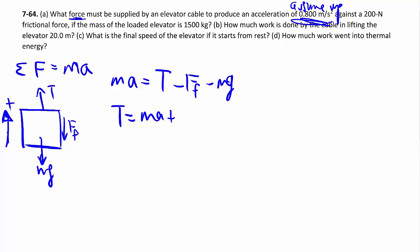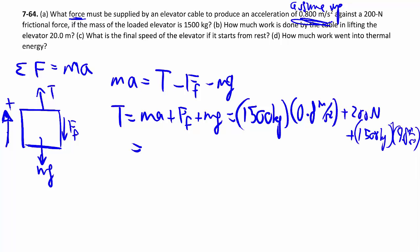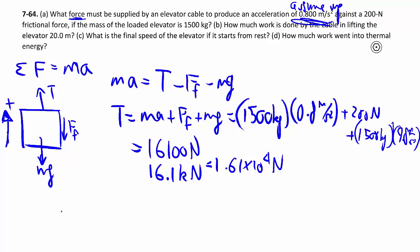Isolating T on one side by adding everything on the other, which makes sense because the tension has to lift up the elevator to speed it up, as well as to work against the friction, as well as to overcome the weight of the elevator. So we have F, all the numbers, giving us a tension of, or you may say 16.1 kN. Since we're given force and acceleration, using F equals ma gets us our part A, part B.